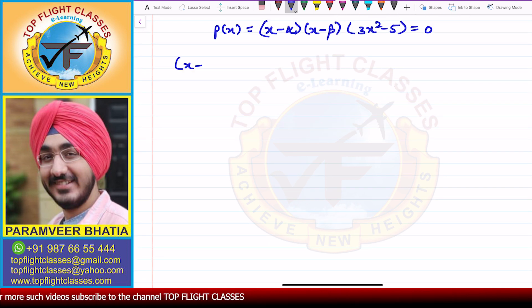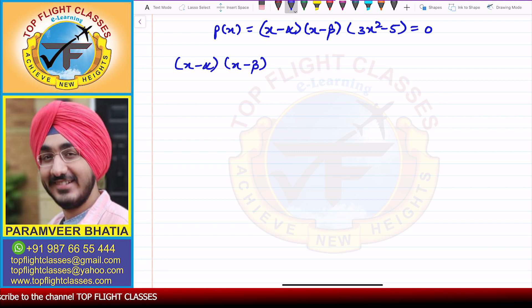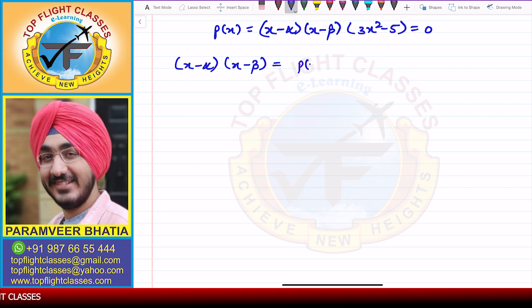From here, to find (x - α)(x - β), I will divide p(x) by (3x² - 5).